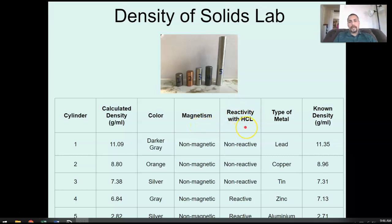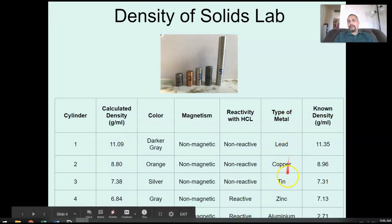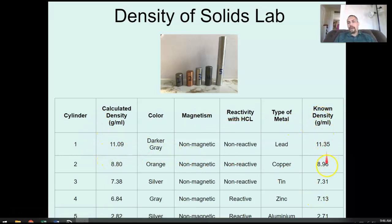Reactivity with hydrochloric acid. That's a chemical property. And again, it's characteristic. It doesn't matter if I have a small sample of the metal or a really large sample, it will still be reactive or non-reactive with acid. And then finally, the type of metal, the identification and the known densities. So you can see how our calculated densities compared with the known densities.